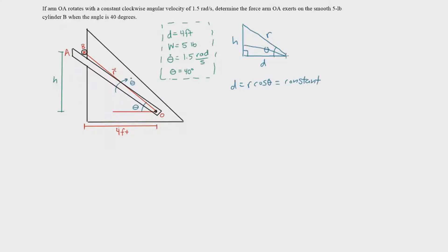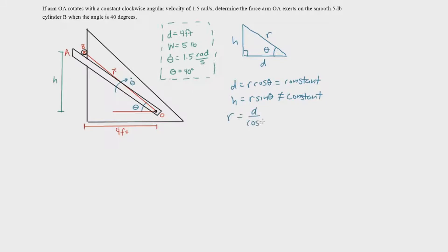Over time the arm moves, so H actually changes with time. We define H as R sine of theta, which is not constant. Since R appears in both equations, we can eliminate R and have H depend on the constant length D. Solving for R gives R equals D over cosine of theta. Substituting into the H equation: H equals D over cosine of theta times sine of theta, which simplifies to H equals D tangent of theta.